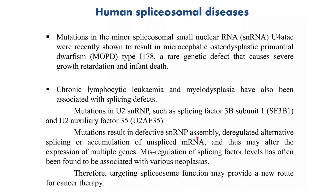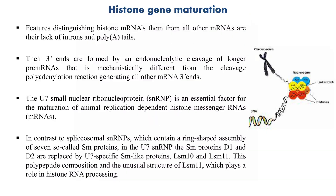Misregulation of splicing factor levels is often associated with various neoplasias, so targeting spliceosome function may provide a new route for cancer therapy. snRNPs are also involved in histone gene maturation. Histones are proteins that provide structural support for chromosomes — DNA wraps around complexes of histone proteins giving the chromosome a compact shape. Histone mRNAs are tightly regulated and present at high levels only in S phase of the cell cycle to provide histones for packaging newly replicated DNA. These histone mRNAs lack introns and poly-A tails.